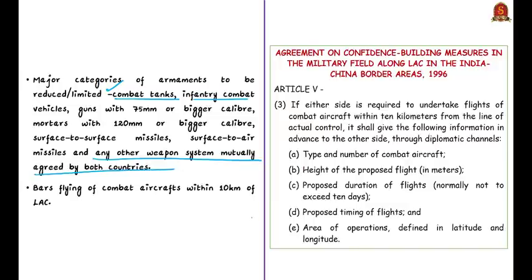Additionally, the 1996 agreement bars flying of combat aircraft within 10 kilometers of the Line of Actual Control. If this is required, the country has to give advance information to the other side, including the type and number of combat aircraft, height of proposed flights in meters, proposed duration and timing of flights, and areas of operations defined in latitude and longitude.